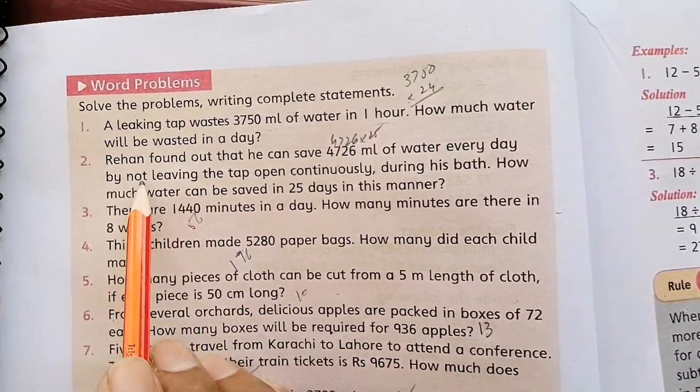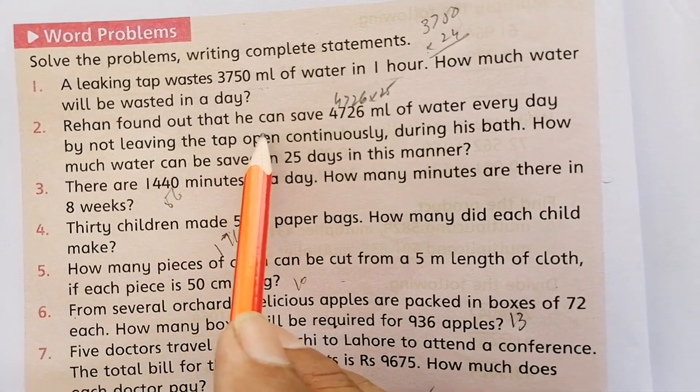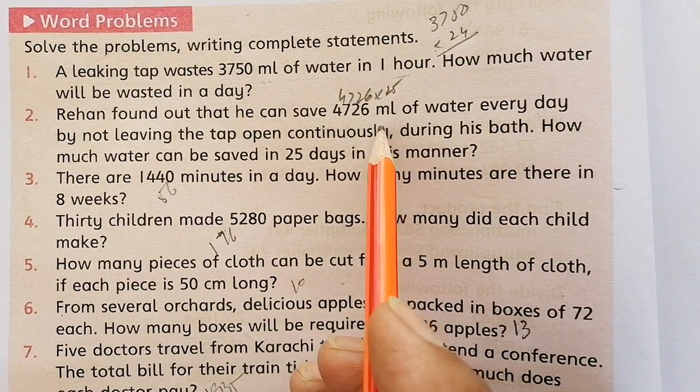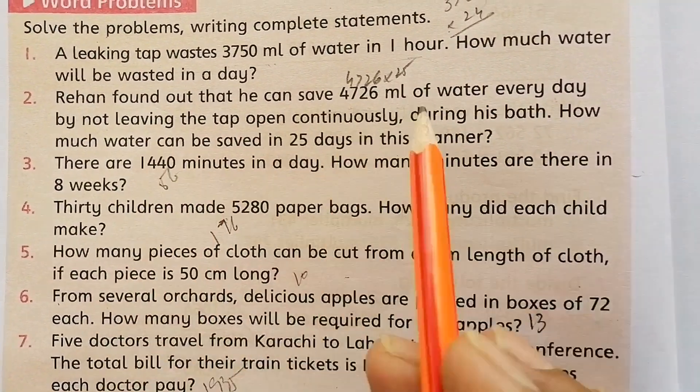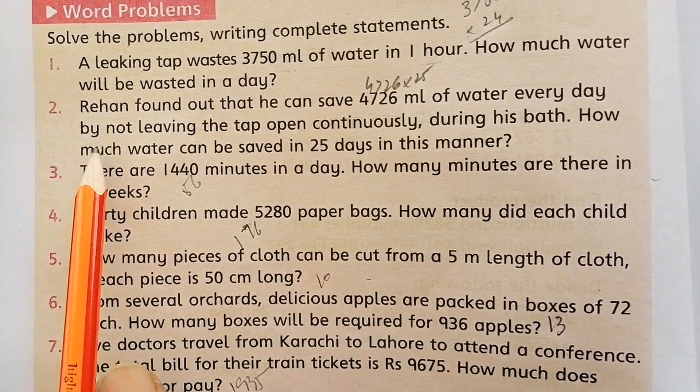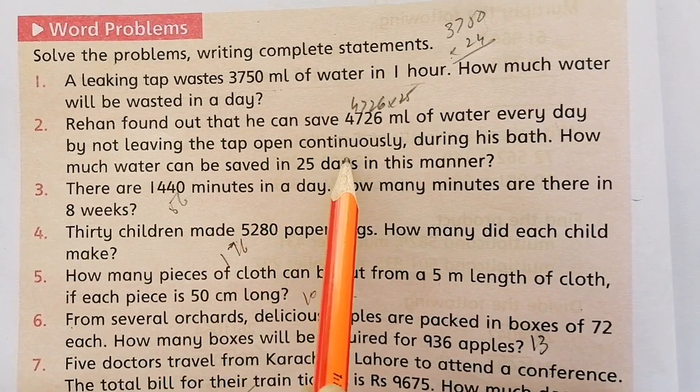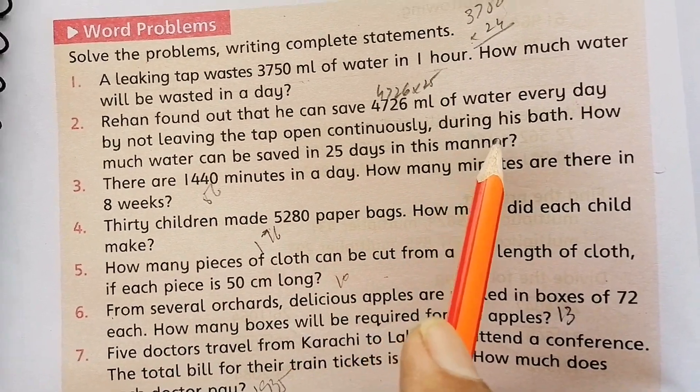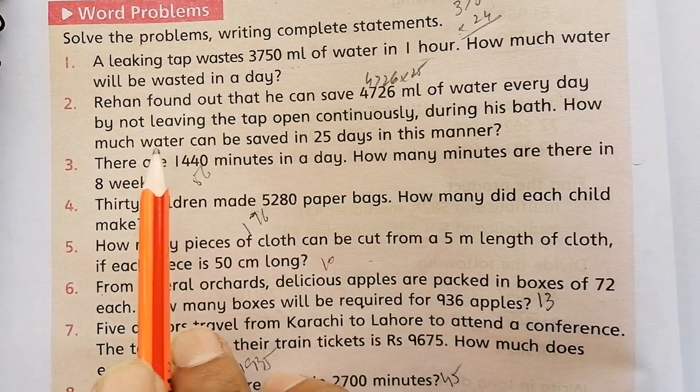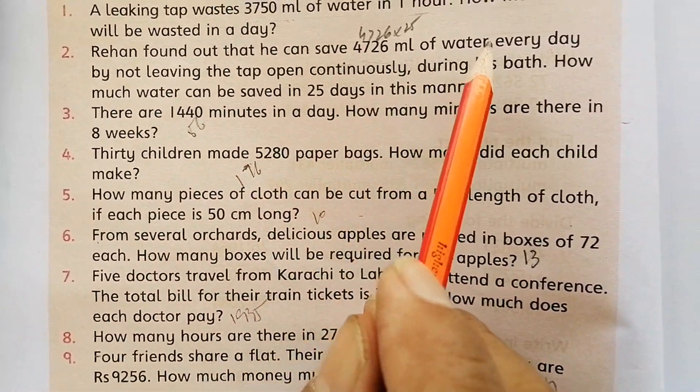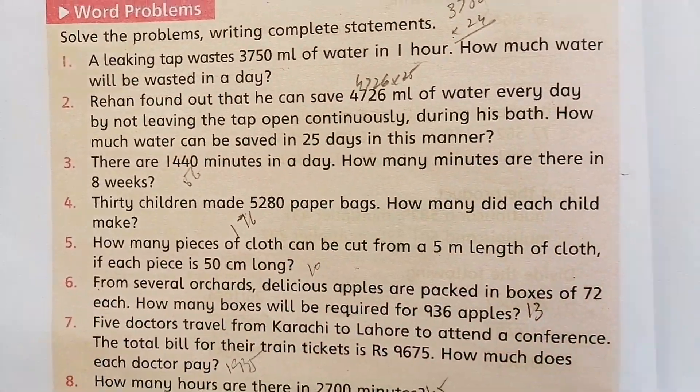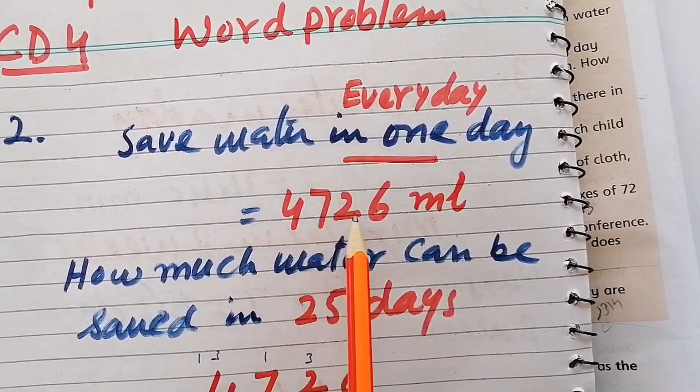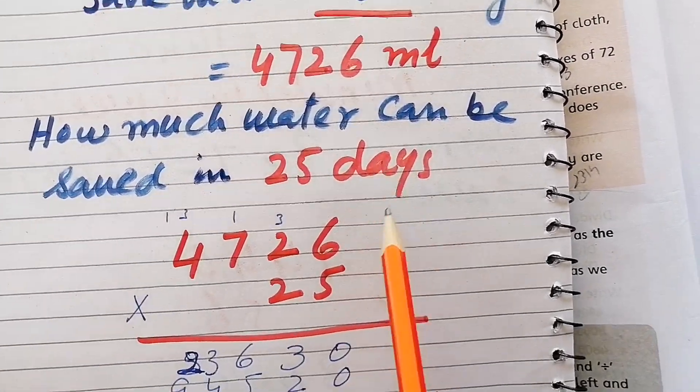Question number two: Rehan found out that he can save 4,726 ml of water every day by not leaving the tap open continuously during his bath. How much water can be saved in 25 days?